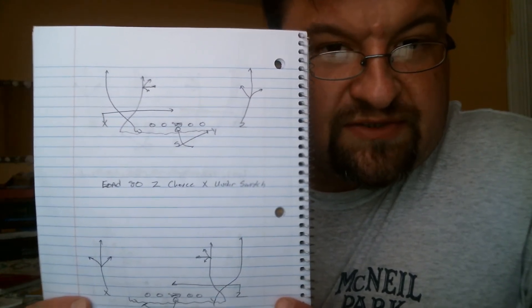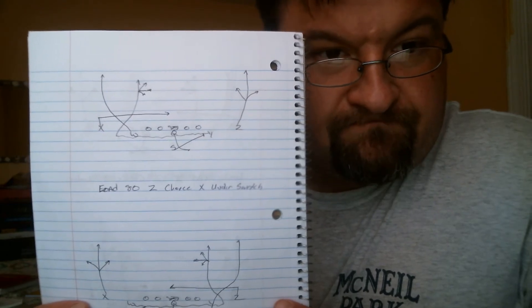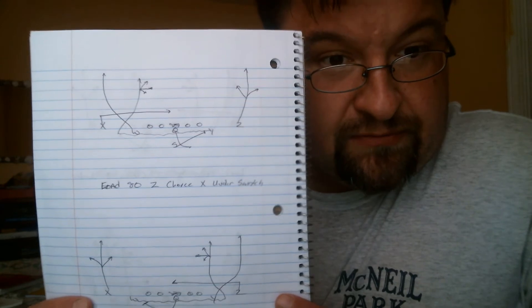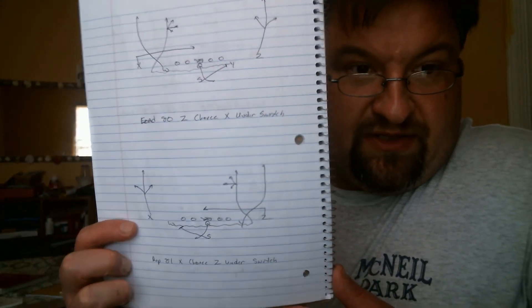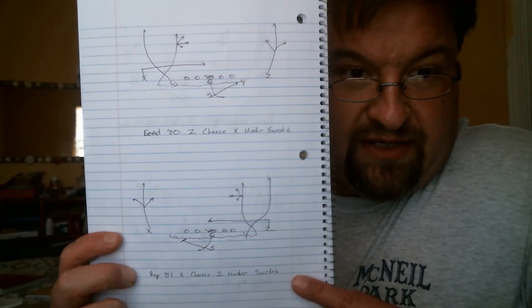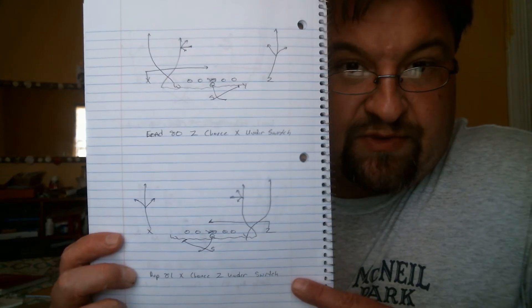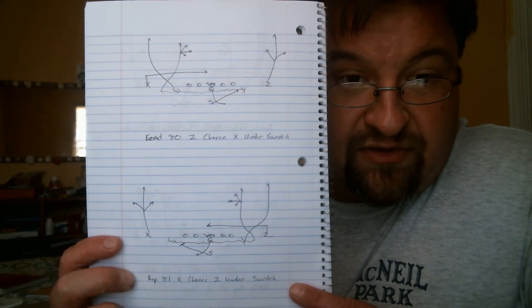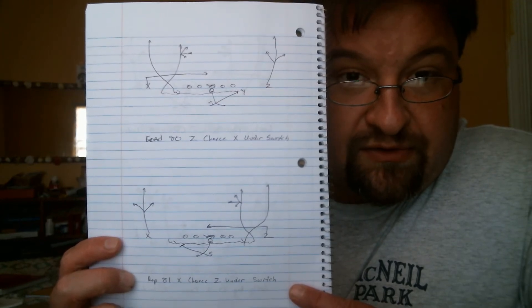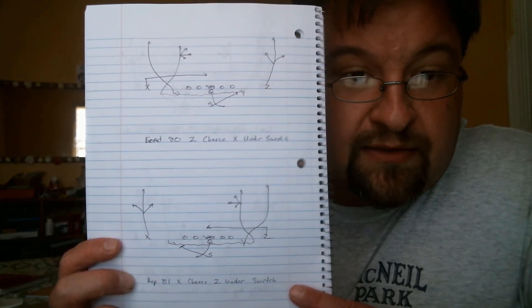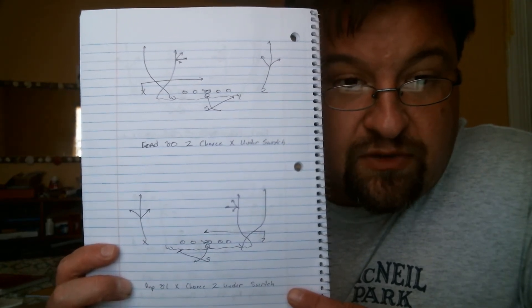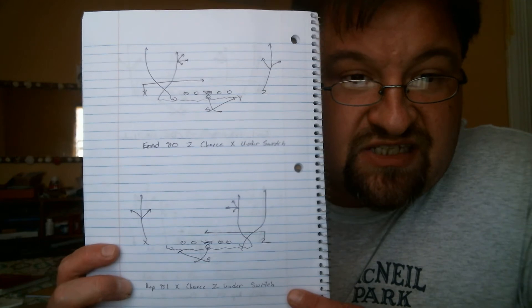For a formation. Exact same principles. Just a different look. Same with down below on RIP 81 X choice Z under switch. X runs his choice route. Z attacks vertically for three steps, then breaks it across the formation on the drag end. Y runs a wheel route. Wing comes in motion and runs a switch seam read.